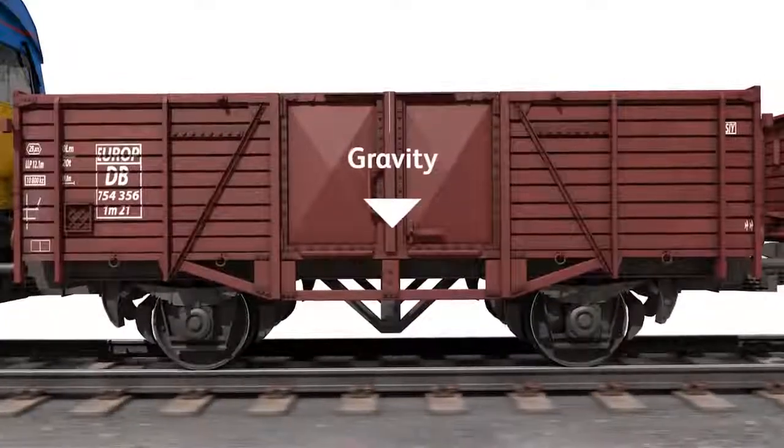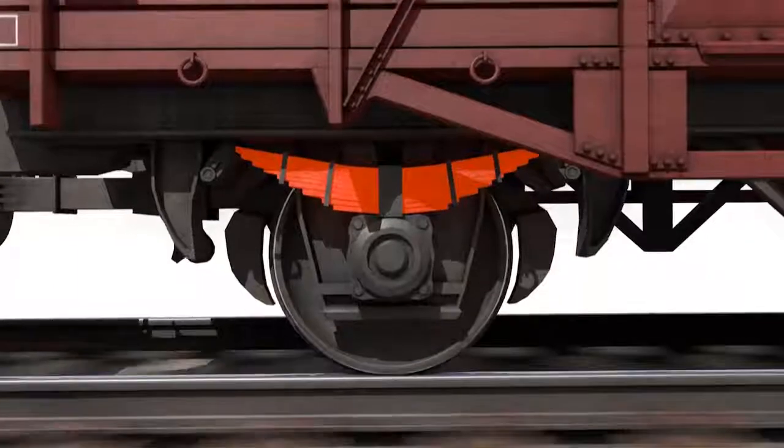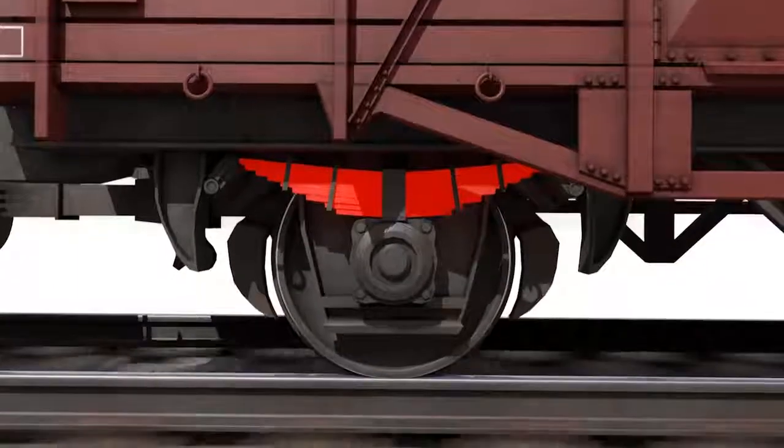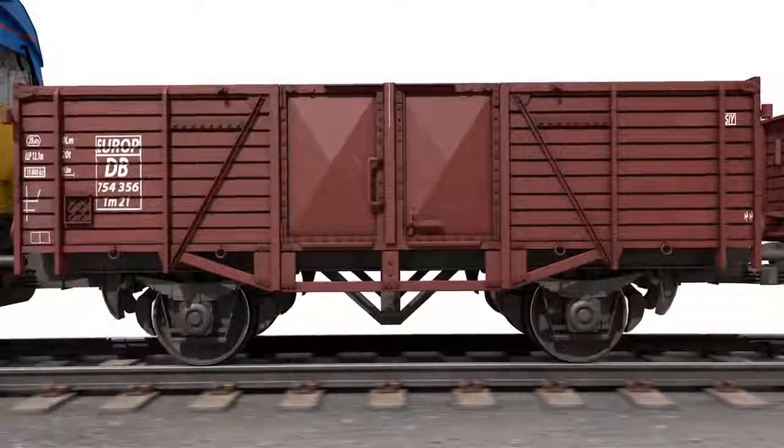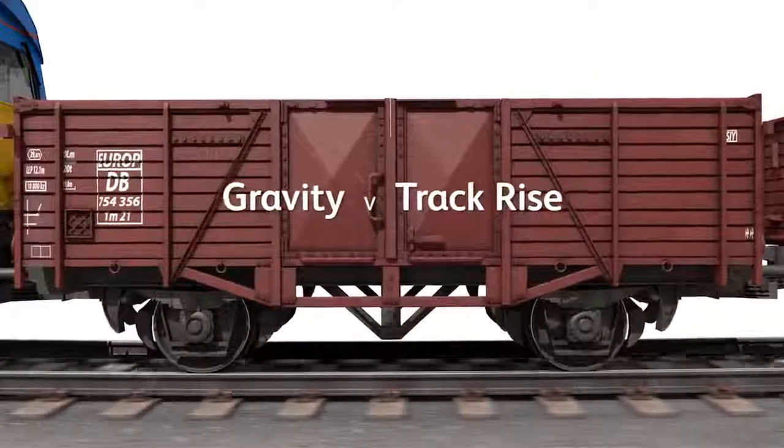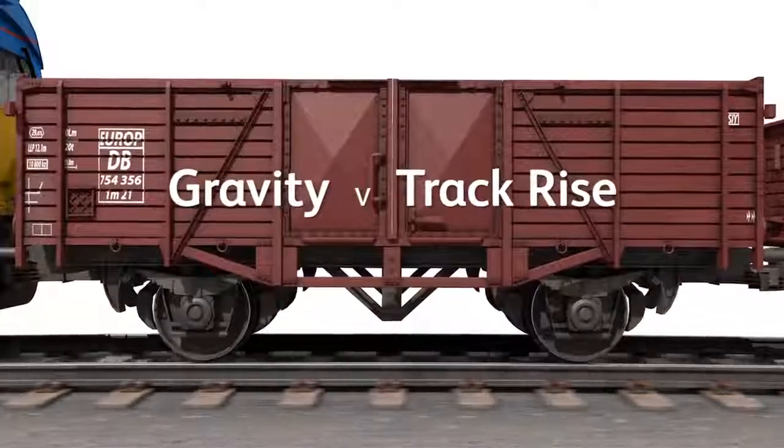Gravity takes over and the vehicle drops back down and lands at the bottom of the following dip causing the suspension to compress. This introduces more energy into the suspension because two opposing forces are acting at the same time, gravity versus track rise.